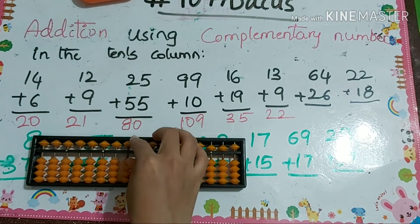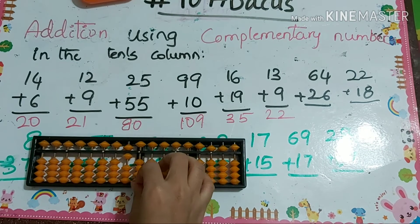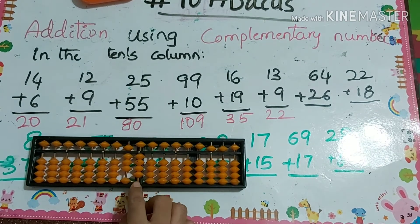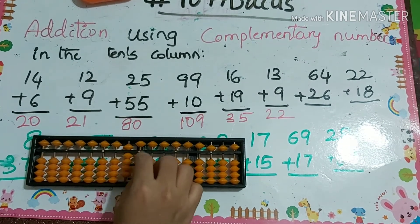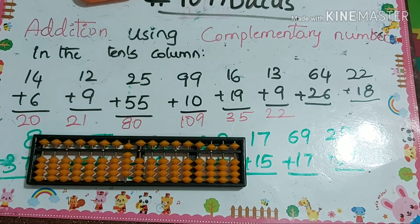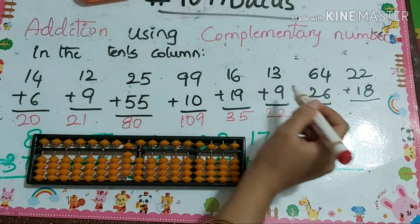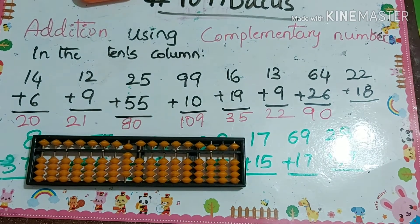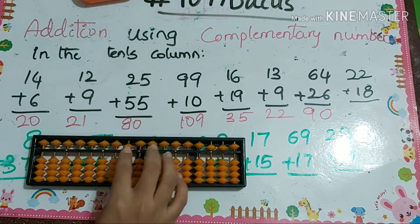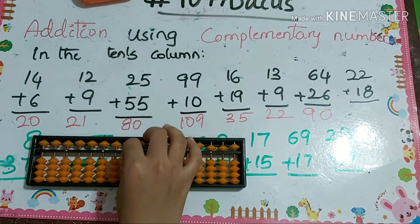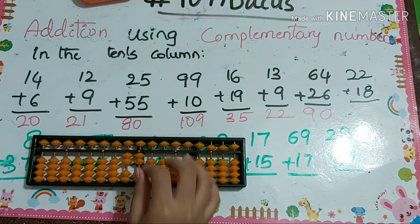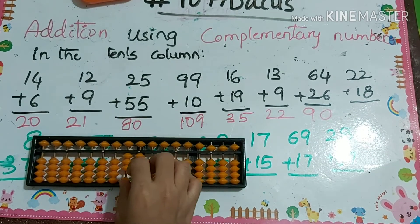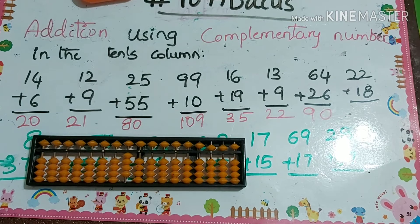Next: 22 plus 18. To add the 8, we use plus 10 minus 2, so the answer is 40.